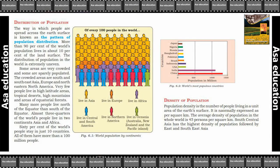Distribution of Population. The way in which people are spread across the earth's surface is known as the Pattern of Population Distribution. Jis tarhe se loog johain poori dunya mein phailay huye hain, us tarhe se loogun ko bola jata hai ki ek pattern hai population distribution ka. Isi liye naam diya gaya hai, Pattern of Population Distribution.